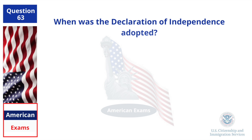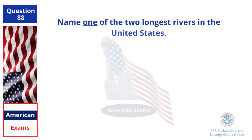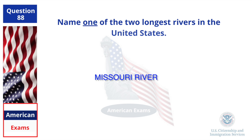When was the Declaration of Independence adopted? July 4, 1776. Name one of the two longest rivers in the United States. Missouri River.